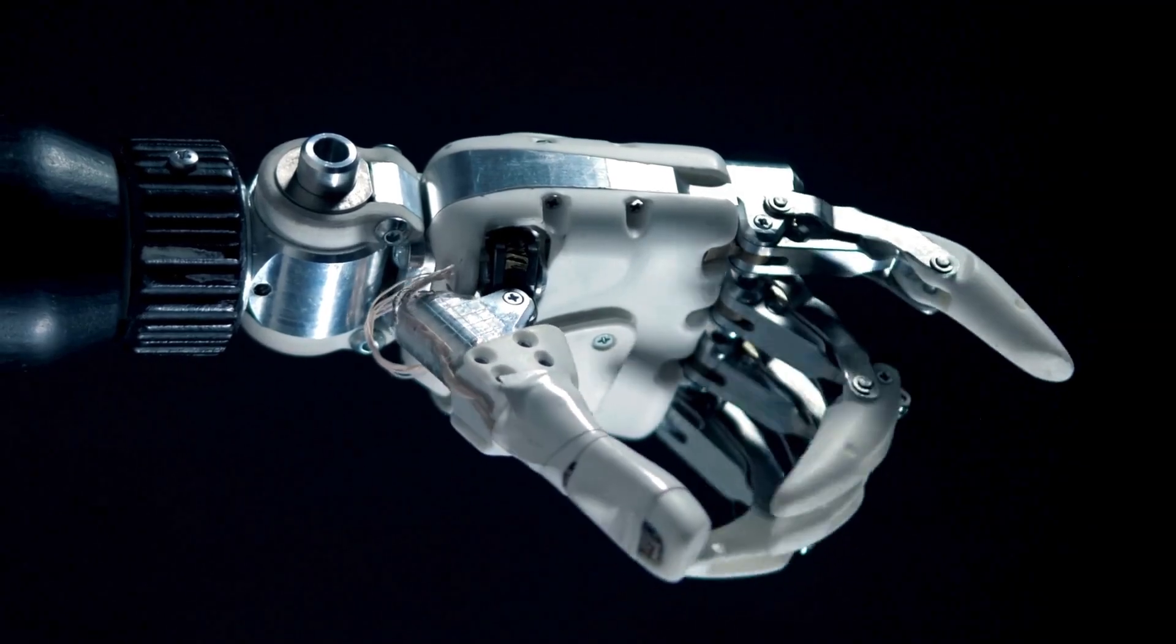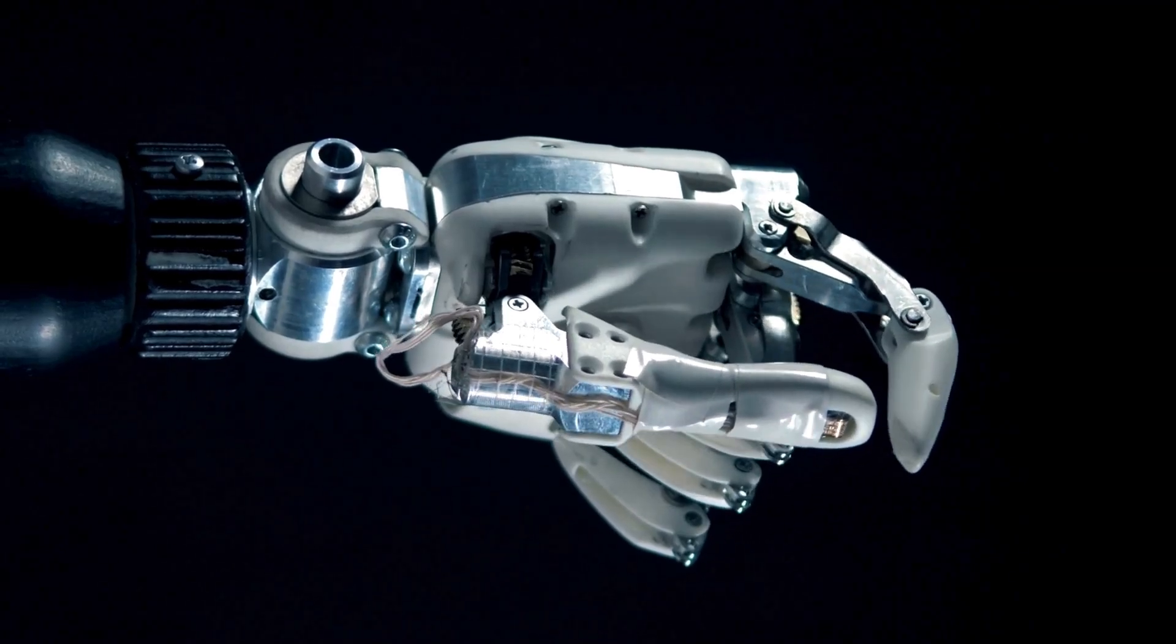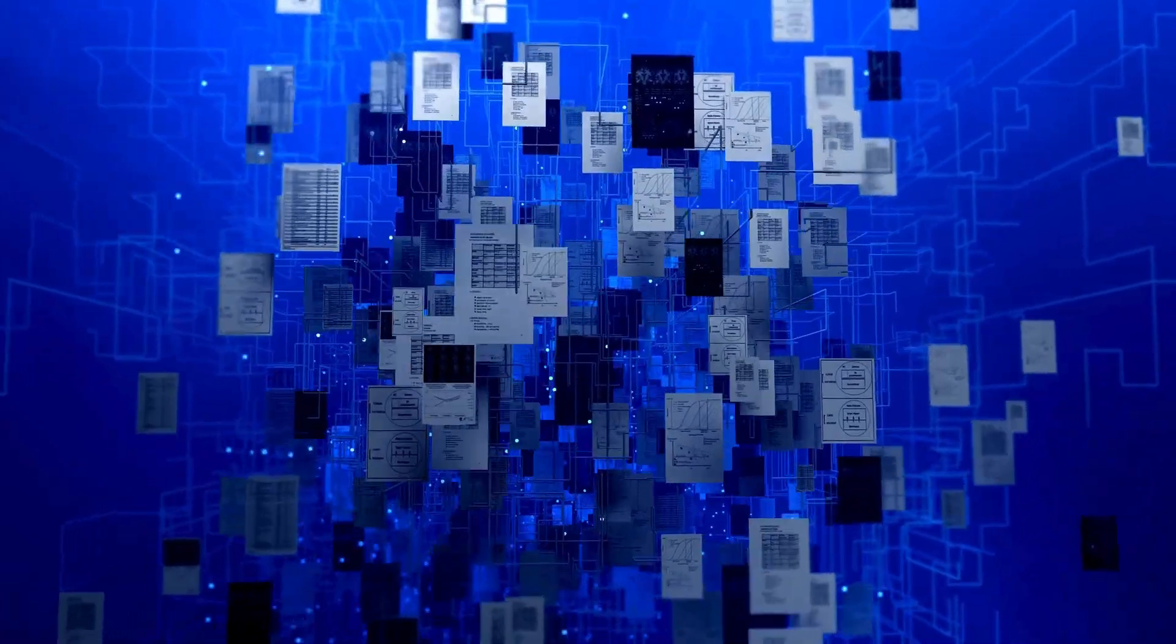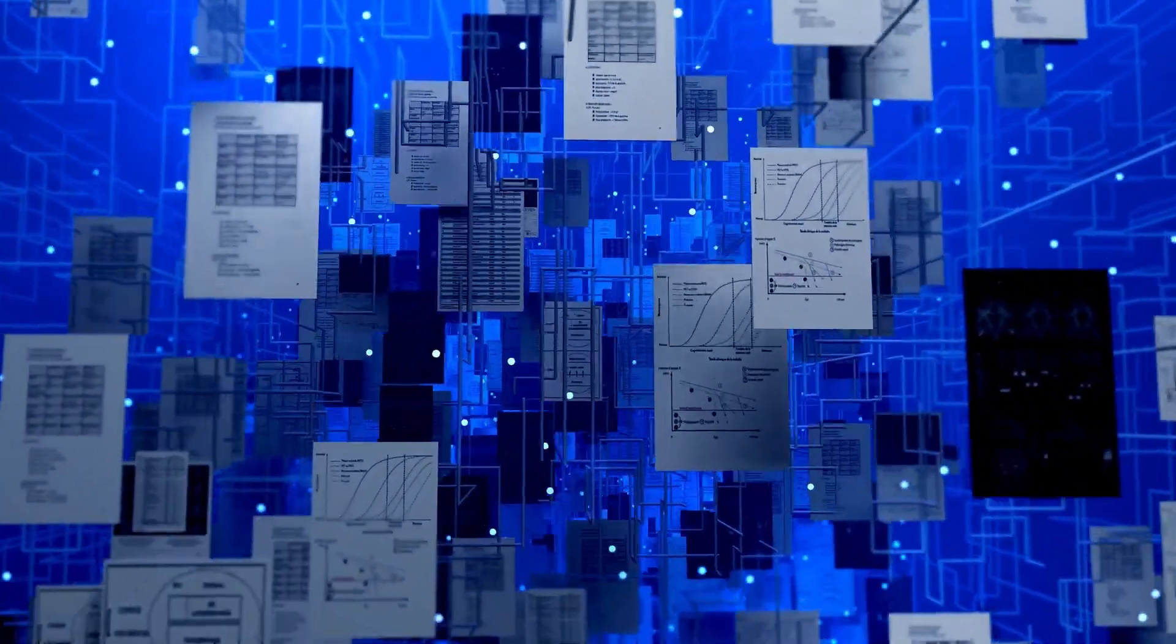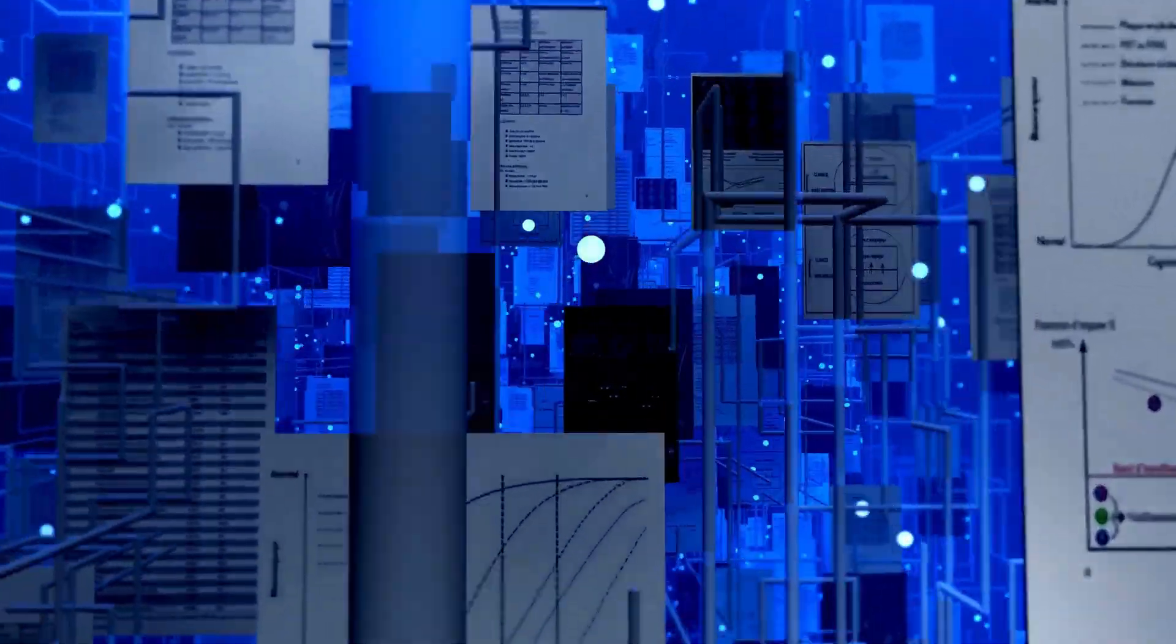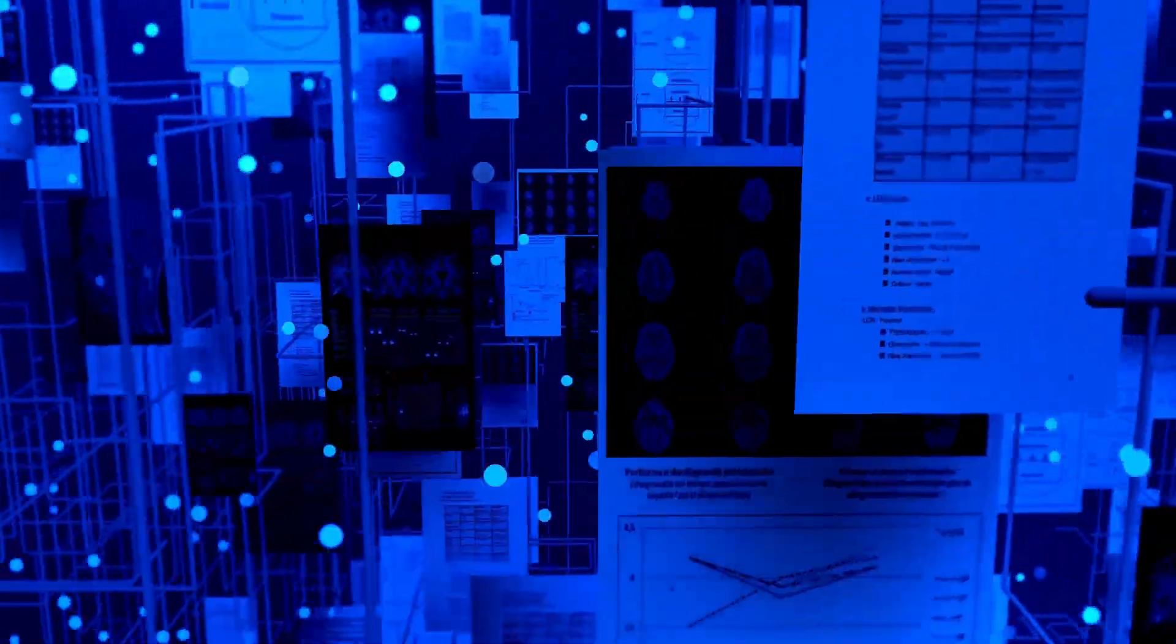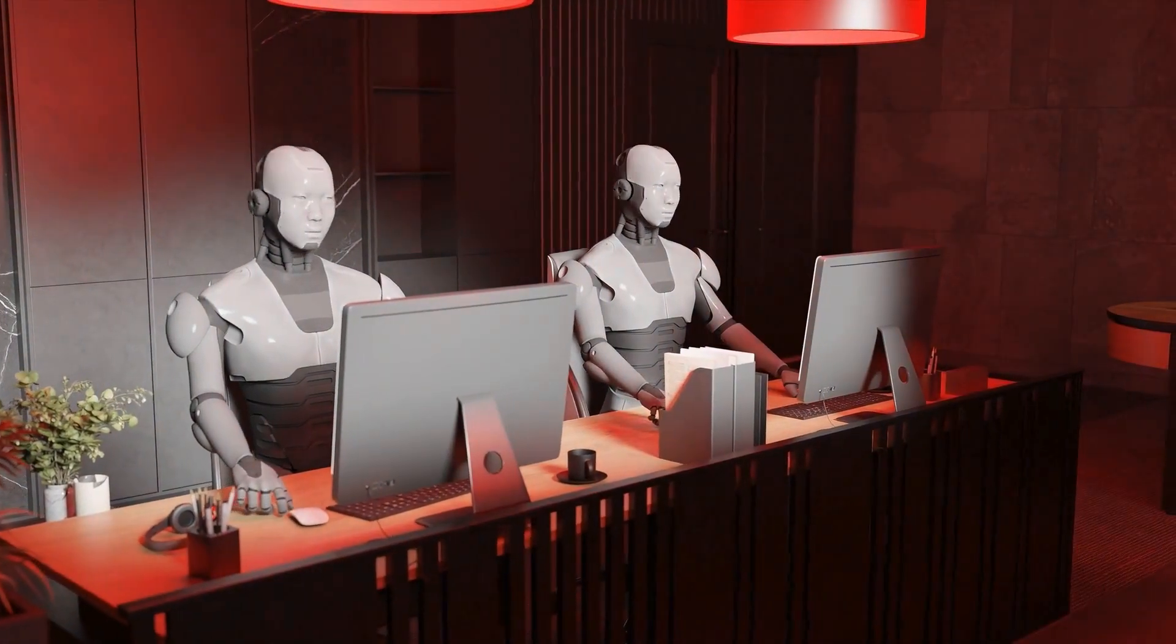In the end, the reason robot partners never shy away from doing anything is simple. They are designed to focus on tasks driven by logic, data and programming. They don't have emotions and they don't experience hesitation like humans do. Instead, they are precise, efficient and capable of tackling a wide range of challenges without fear or distraction.